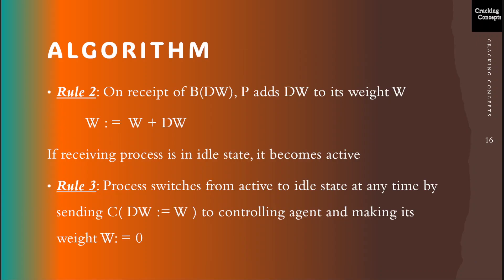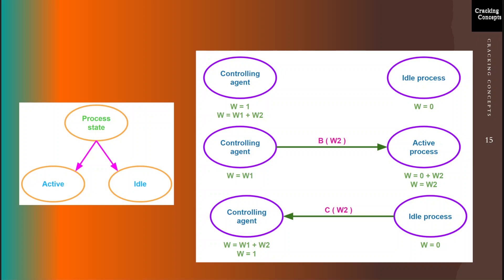Rule 2: on the receipt of a basic message, the process adds the received weight to its own weight, so its new weight becomes W = W + DW. If the receiving process is in an idle state, it becomes active. As shown in the example, when this process receives a basic message from the controlling agent with initial weight 0, its new weight becomes W = W2. Since it received a message, its state changes from idle to active.